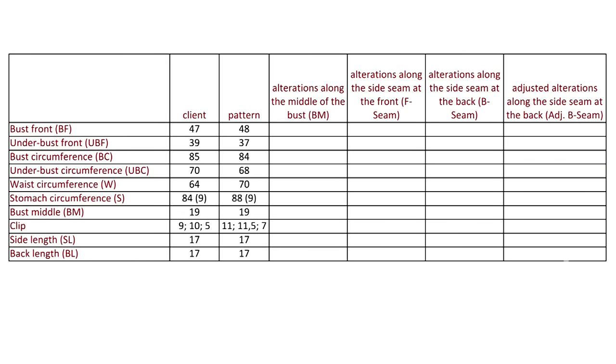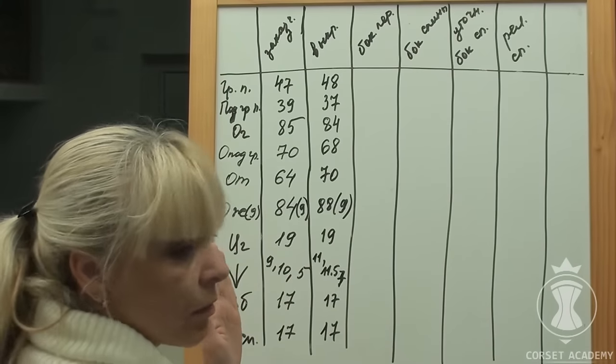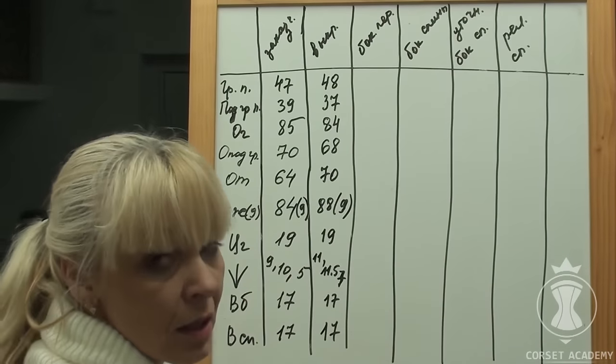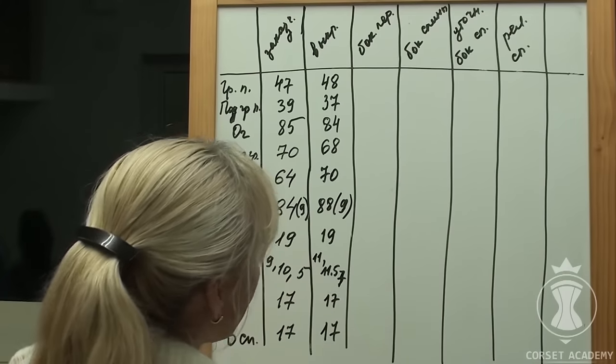I have prepared my traditional table with client's measurements in column 2 and pattern measurements taken off the mock-up in column 3. There is some divergence between the pattern and my client's measurements, so I need to think it over and make some adjustments.